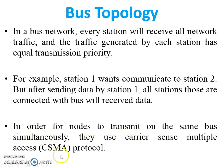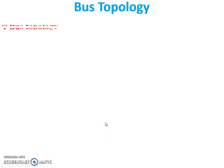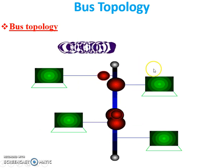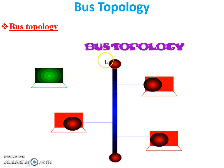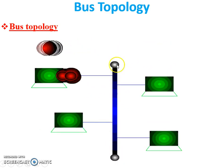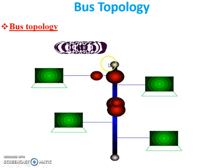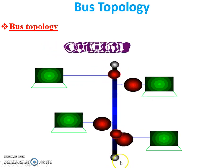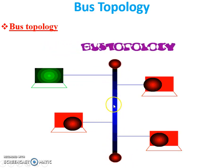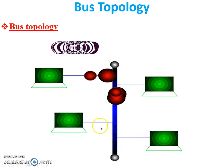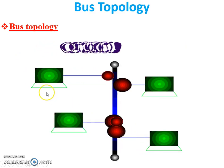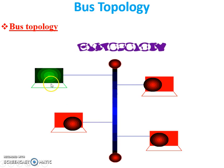In order for nodes to transmit on the same bus simultaneously, they use Carrier Sense Multiple Access protocol — the CSMA protocol. This is a GIF file showing the working of bus topology. You can see the terminators at both ends of the bus, the main bus cable, and the workstations connected to it.